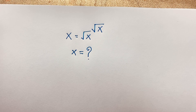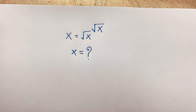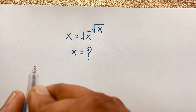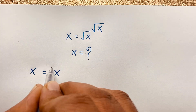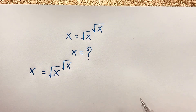Hello everyone. In this video we have solved a nice Junior Math Olympiad question: x is equal to square root x to the power square root x. We will find out what is the value of x in this Math Olympiad question. So let's start. Here is x is equal to x and here is root x.